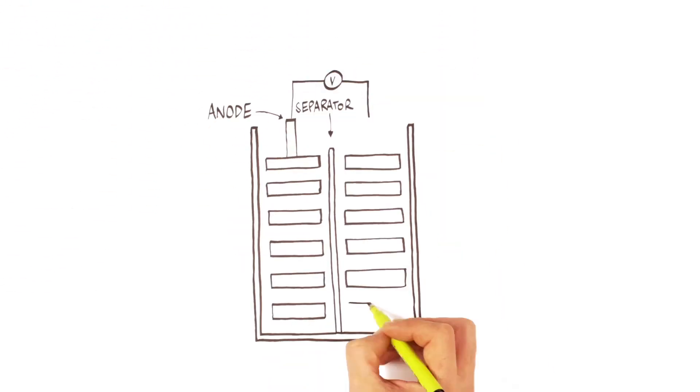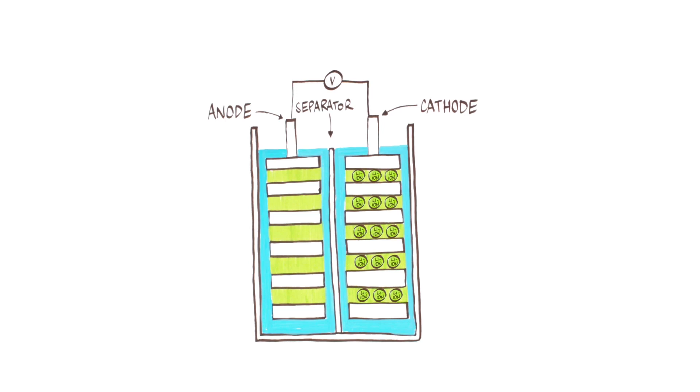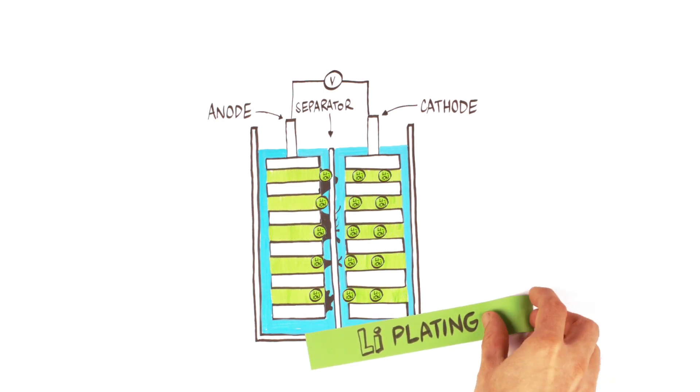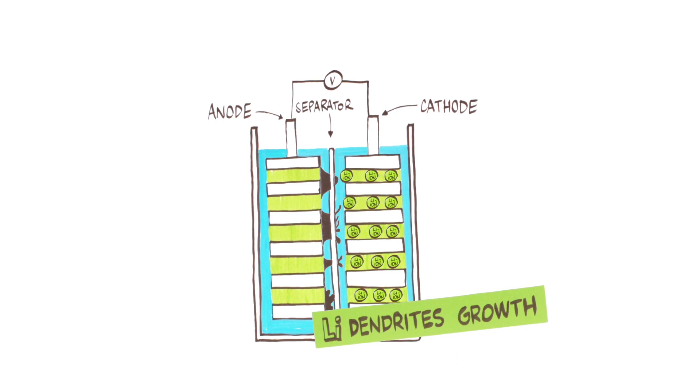These characteristics depend on how effectively the lithium ions move during the charging and discharging process, and where they reside meanwhile. A serious problem can be the formation of regions with a high concentration of metallic lithium, so-called lithium plating, and the formation of lithium dendrites.